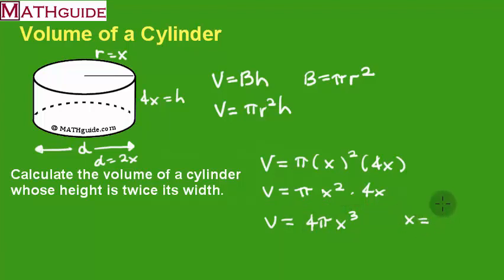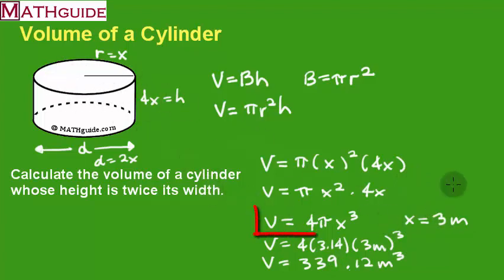So for instance, if for some reason we knew, when we found out later on, that the radius x is 3 meters, I could then plug it in. I would say, okay, well, according to our formula, we're going to take 4 times pi times 3 meters cubed. So you plug this all into a calculator, and of course, your calculator is going to spit out 339.12. And of course, meters cubed would be meters times meters, meters times meters is meters cubed. And there you go. That would be the volume of this particular cylinder with a radius of 3 meters.